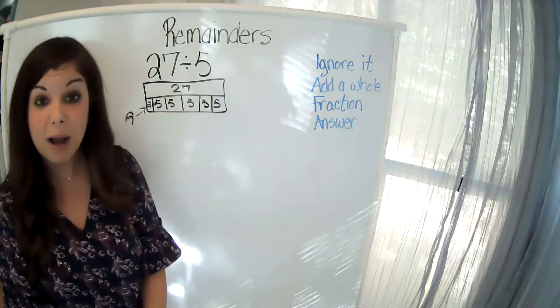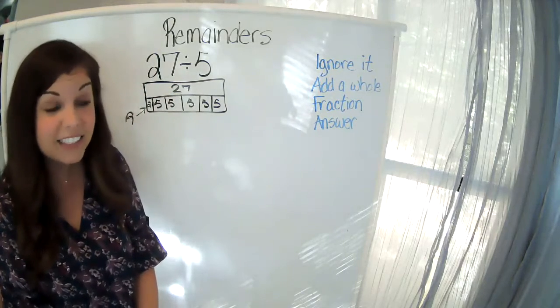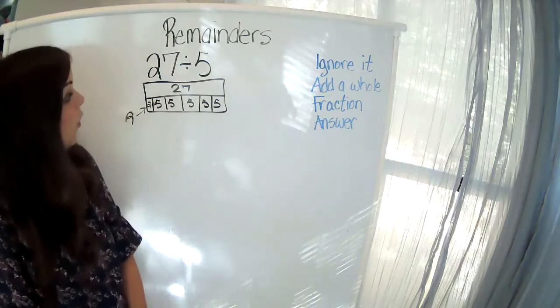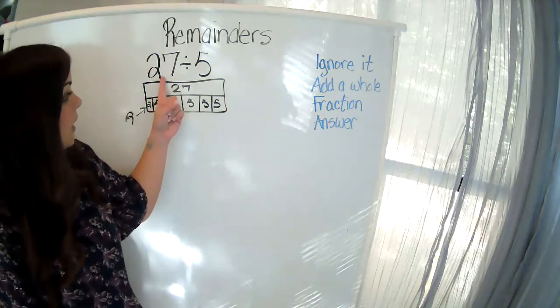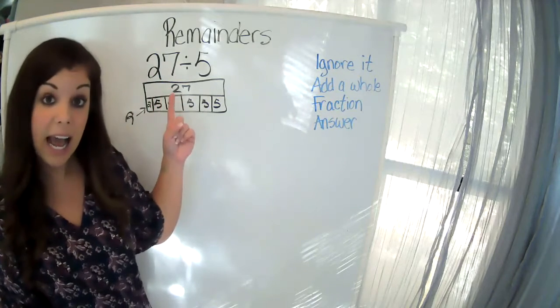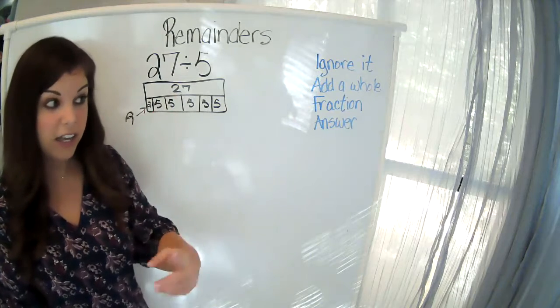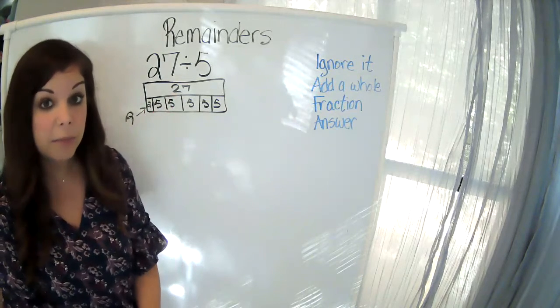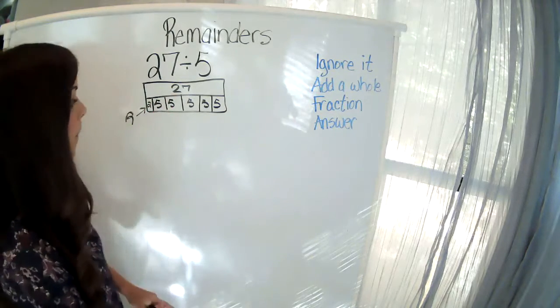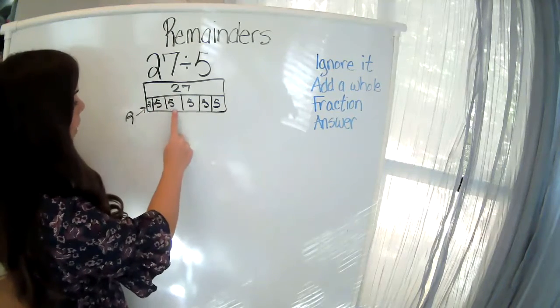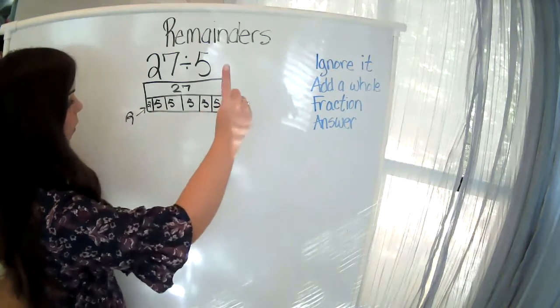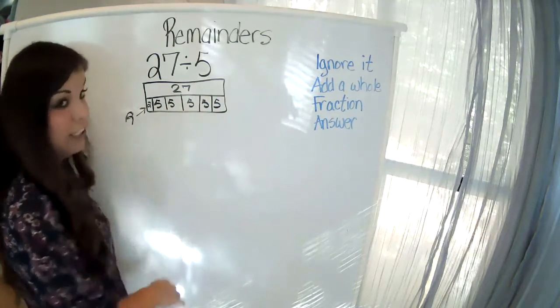So, the first story problem that we're going to talk about is kids going on a field trip. We're going to say that I have 27 students, and I can fit 5 kids in one vehicle, and I need to figure out how many vehicles I get. So, in this problem, each one of these represents one vehicle.